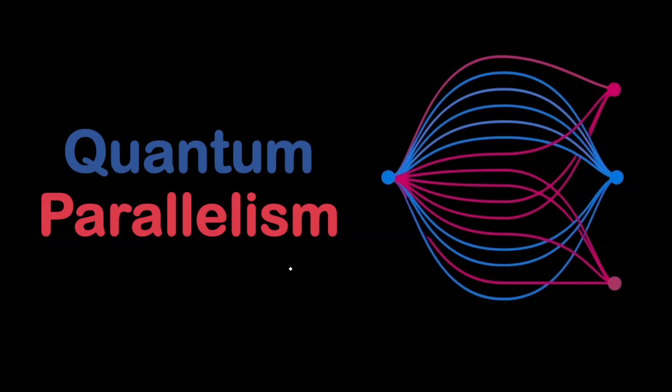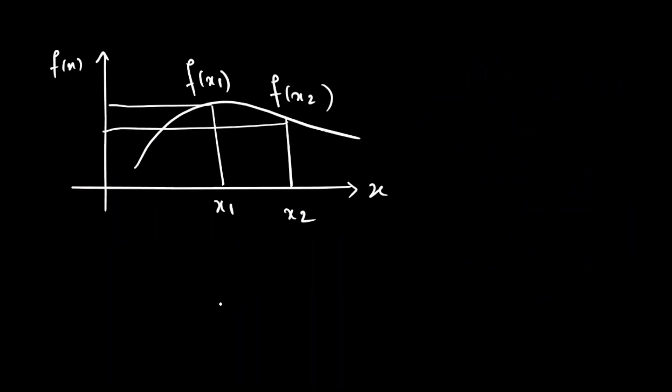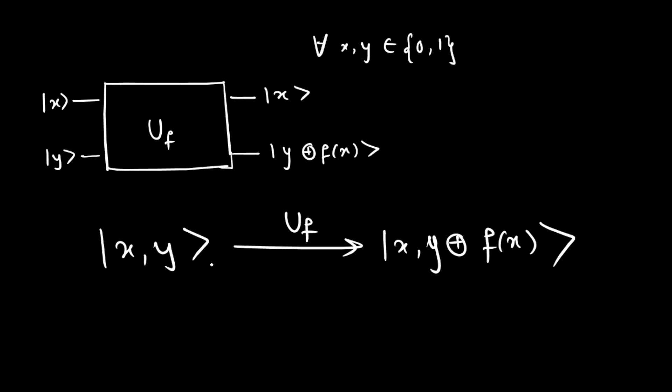In this video, we will see how quantum parallelism works and some of its limitations. Let us consider a function f with one bit domain and one bit range. Now we will define a transformation given by the mapping xy using this transformation gives us y XOR f(x).